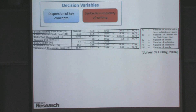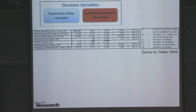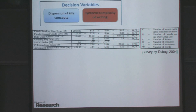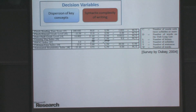That is the first class of variables. The second class is what we call syntactic complexity. The first thought that came to mind was to use readability formulas, because there has been a lot of research into obtaining readability formulas to capture writing complexity.